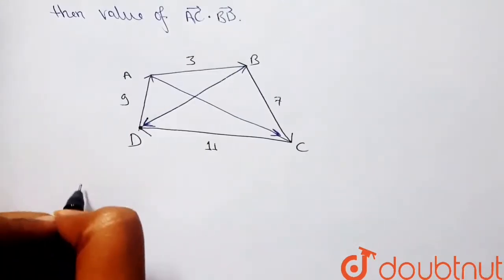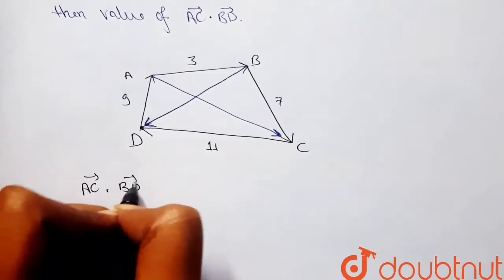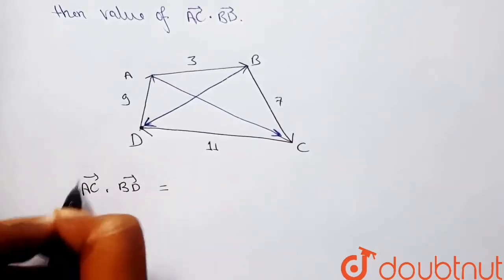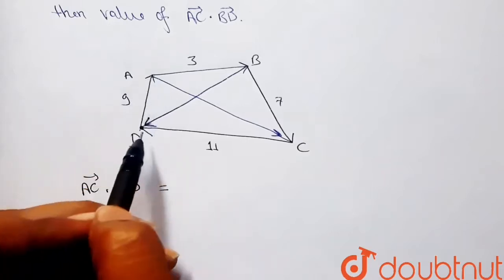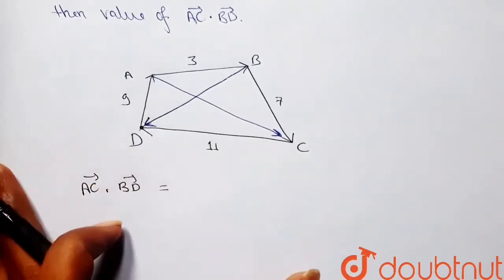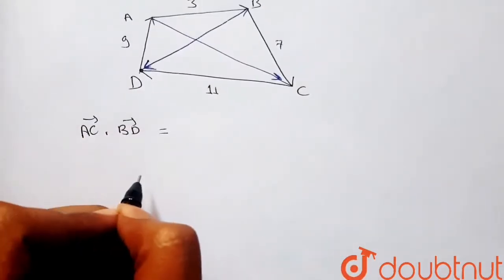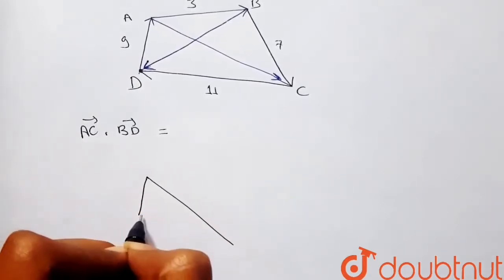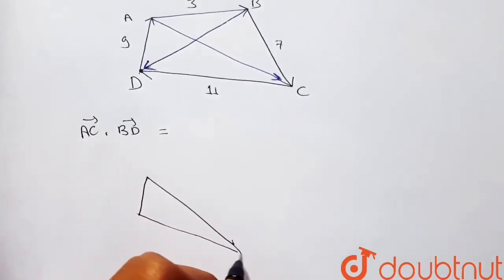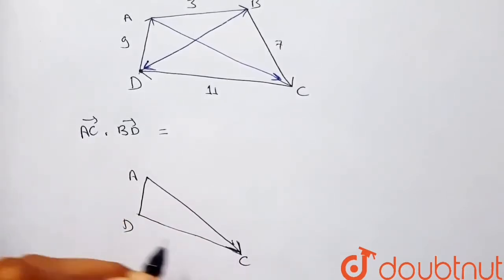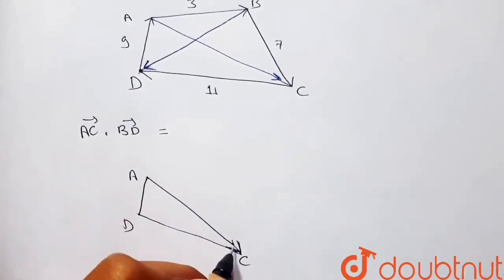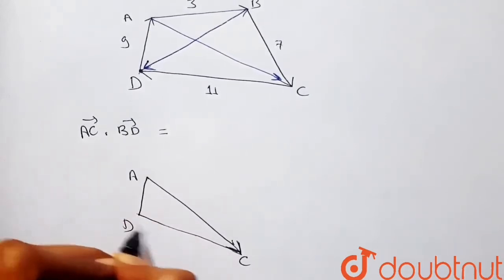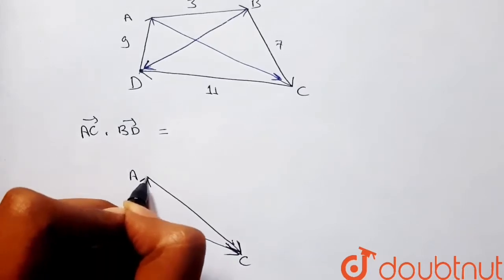So let's start. If we have to find vector AC dot vector BD, I can write vector AC as vector DC minus vector DA. If I draw triangle ABC again — this point is C, this point is B, and here we have A — this vector AC is like this.